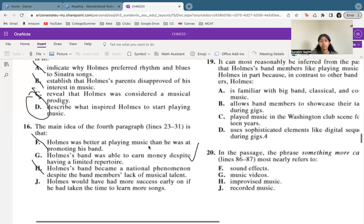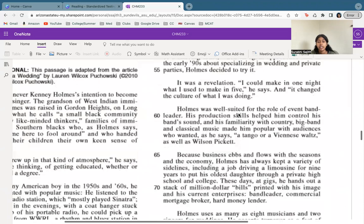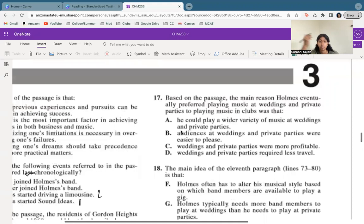Let's jump back up to 17. The main reason he preferred playing at weddings. You might remember this from the passage, but if you don't, let's go ahead and scroll up and we'll see that he was able to make one night what he used to make in five. So that means it was more profitable. He was making more money. That is definitely option C.